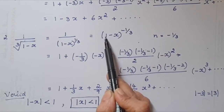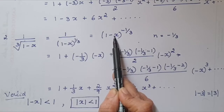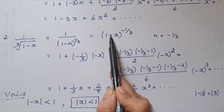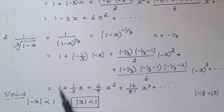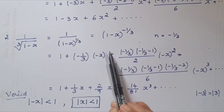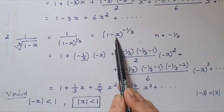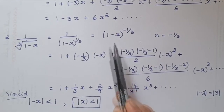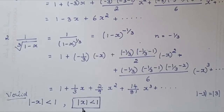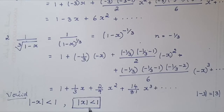Whatever the term is inside the bracket along with 1 — for example, if it were 1 − 3x, then you write |−3x| < 1 — you write that expression less than 1 and simplify to find the range of validity.